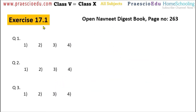Now exercise 17.1, question number 1: which one of the following alternatives differs from the other three? The options are 19 by 4, 17 by 4, 3 by 4, and 5 by 4. 19 by 4, 17 by 4, and 5 by 4 are all improper fractions because the numerator is greater than the denominator. But 3 by 4 is a proper fraction because the numerator is smaller than the denominator. So option number 3 is the correct answer.